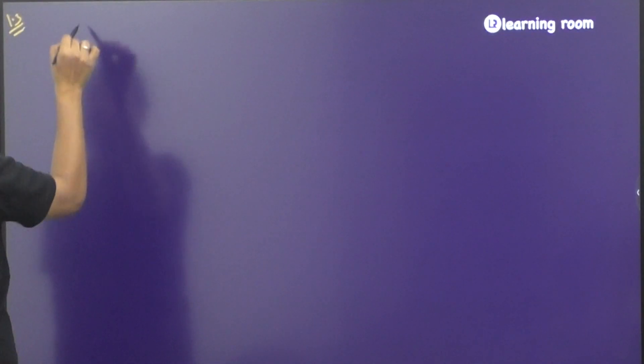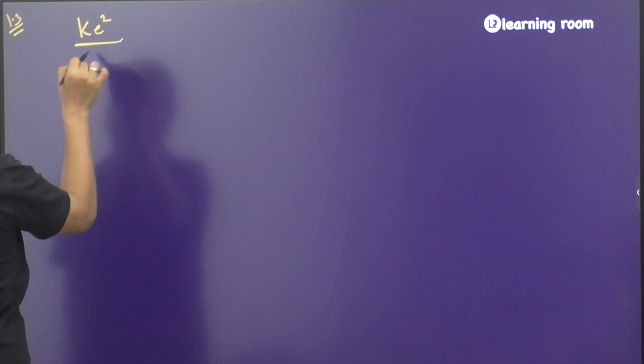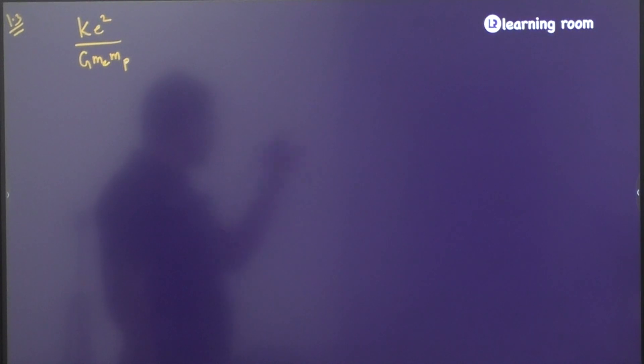If you observe this, ke² divided by G into me into mp. If I basically divide them,